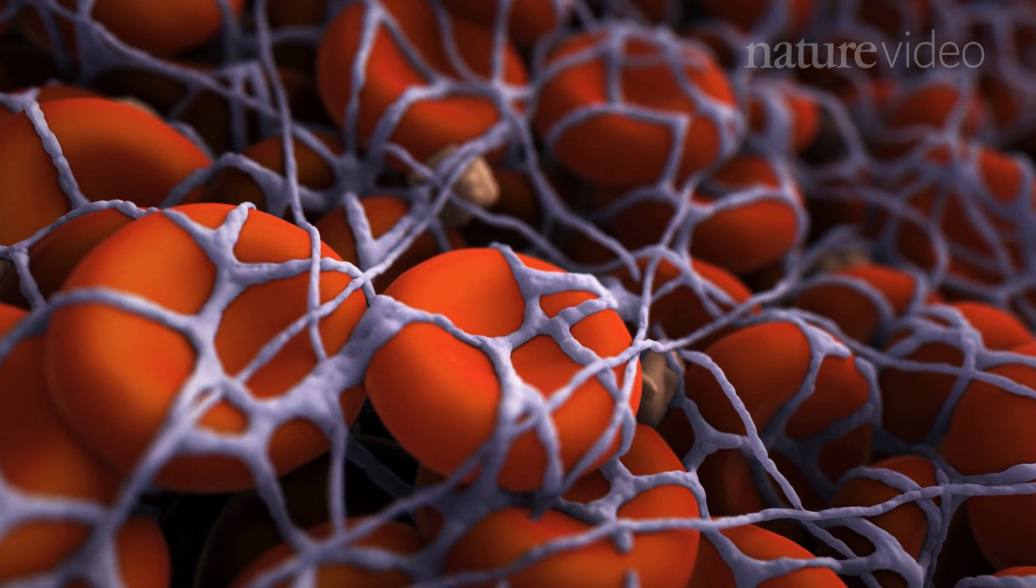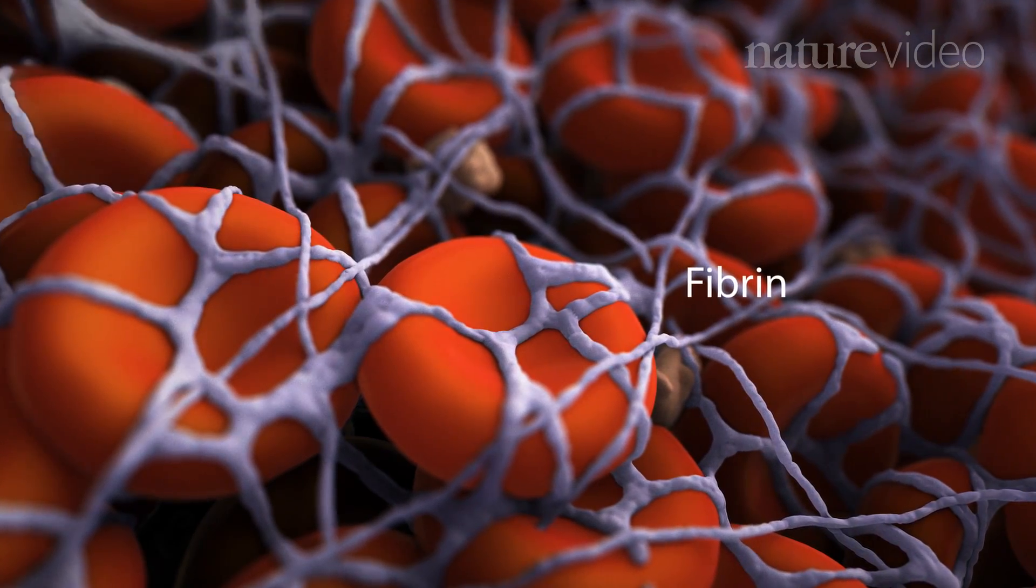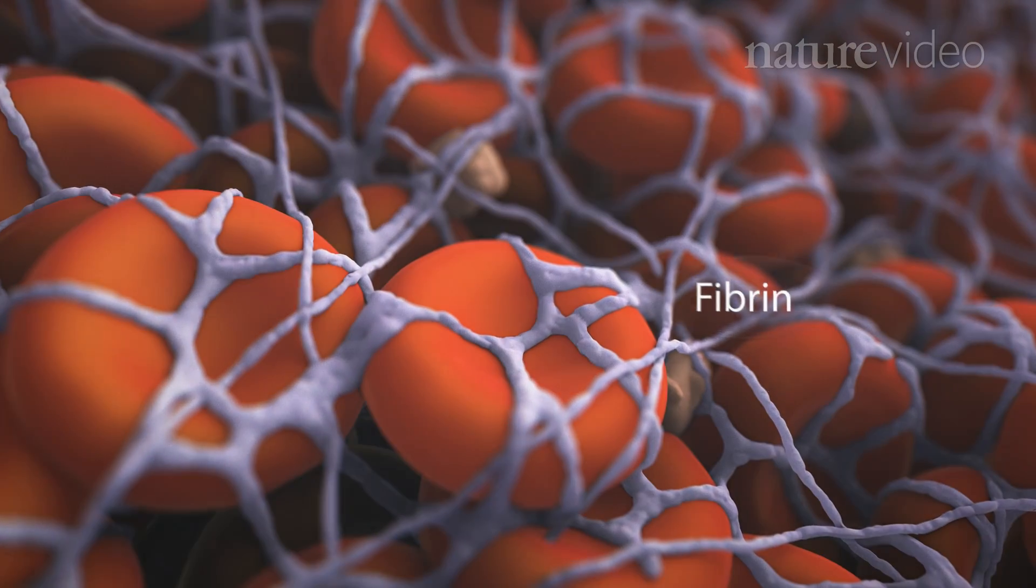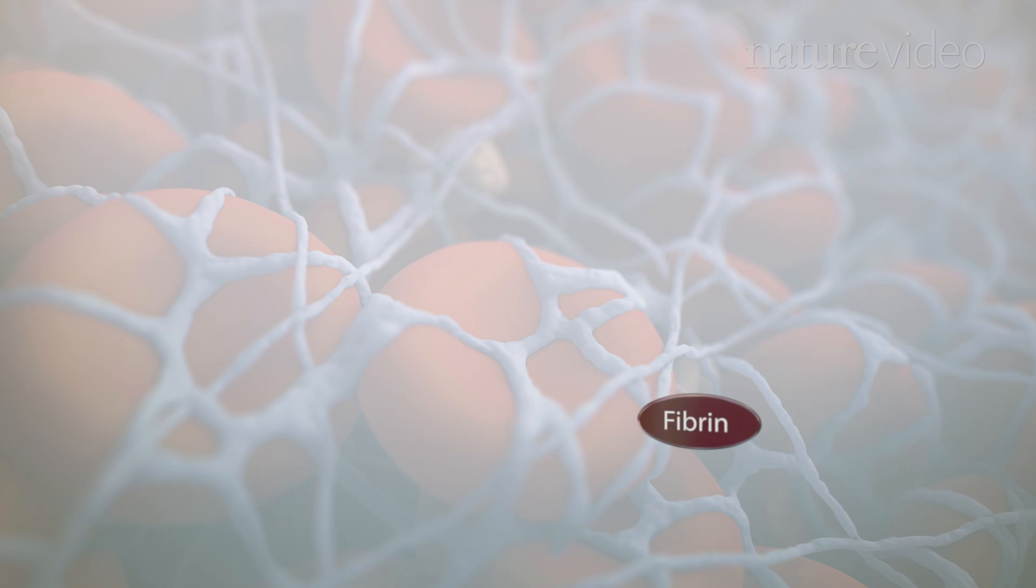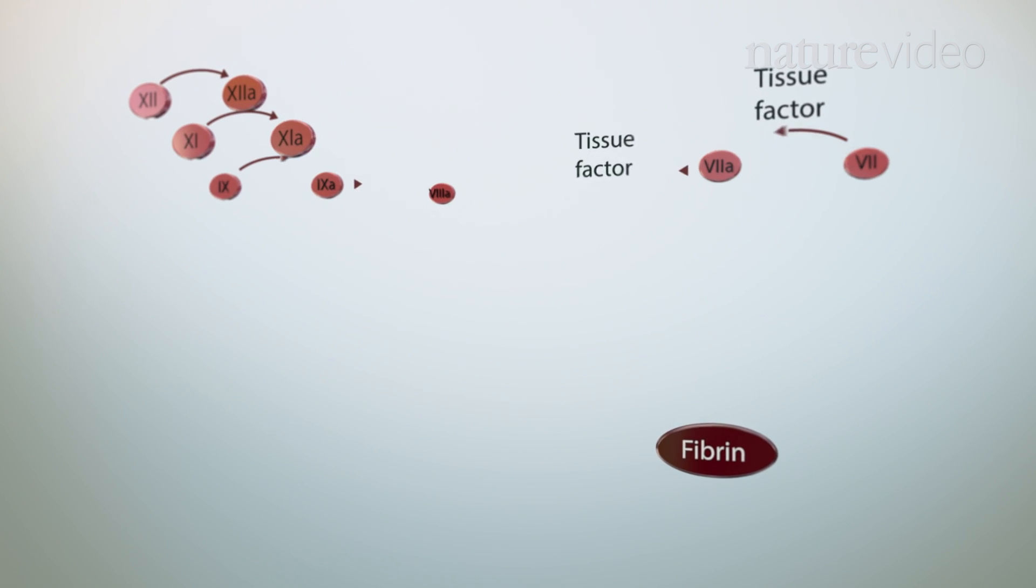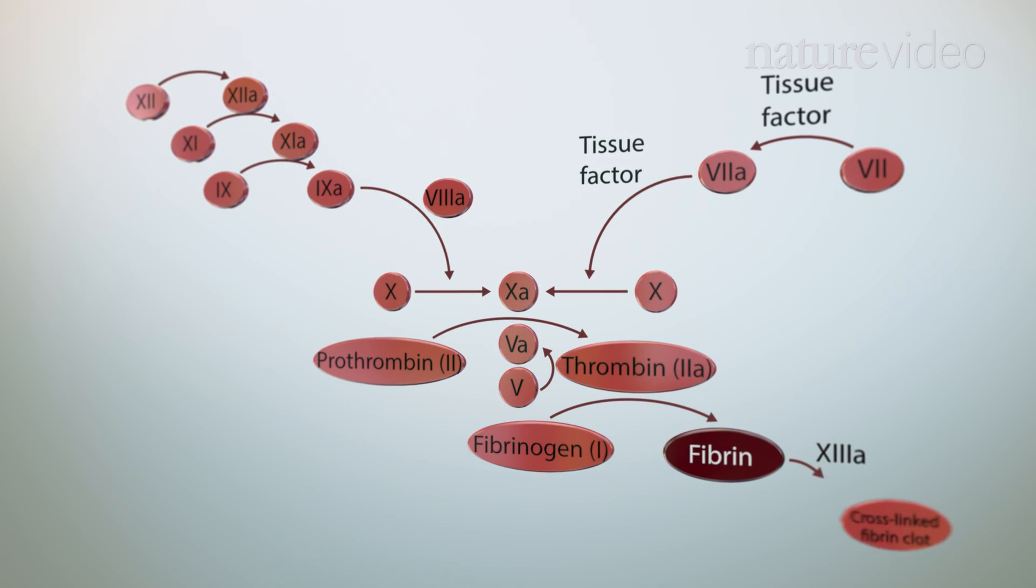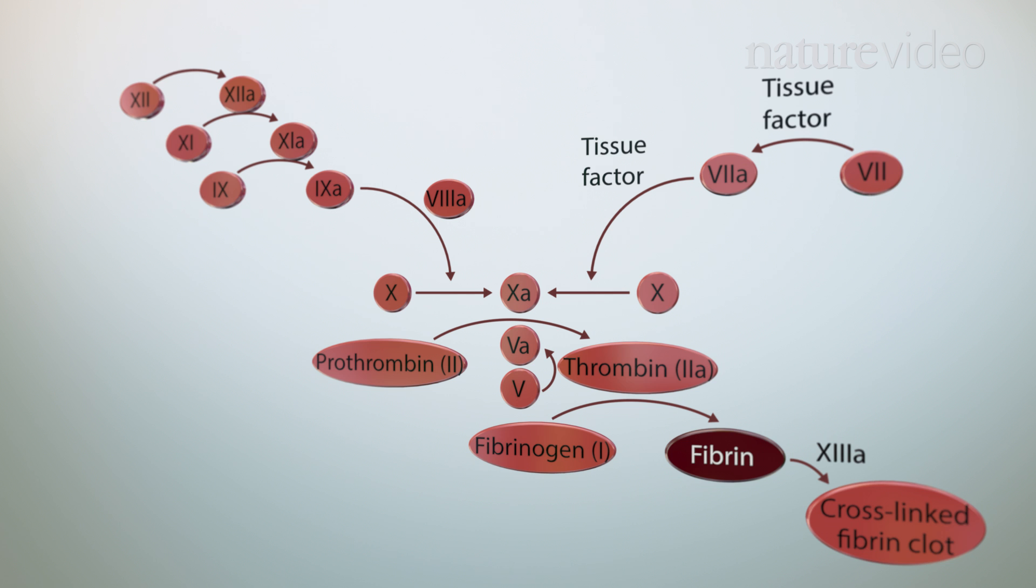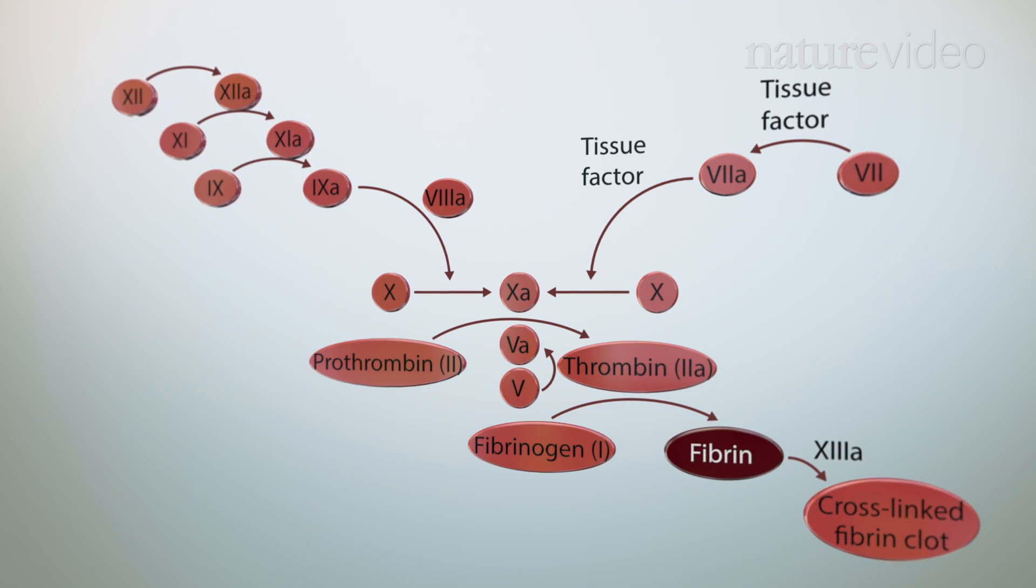During blood clotting, the blood cells are held together within a mesh of fibrin. Fibrin is the end product of the blood coagulation cascade. And medicines that target individual components of this cascade have been developed to inhibit blood clotting in high-risk patients.